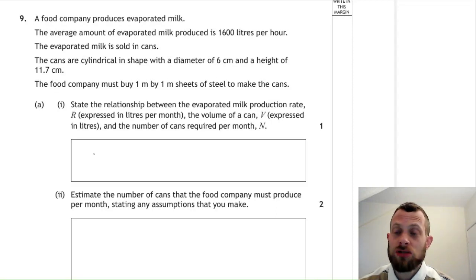The one thing that might trip you up is you might think that R is a rate, liters per month. So we might think R is liters divided by months. However, it's all per month. So N is also cans per month. So let's just forget about months just now. R is the total amount of milk, V is the milk in one can, and N is the number of cans.